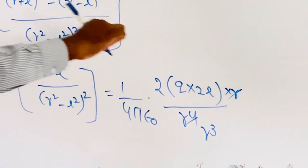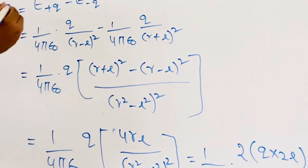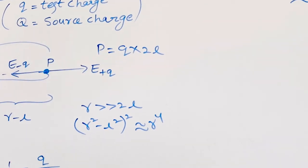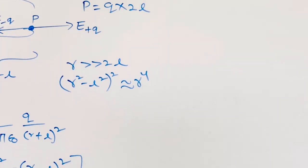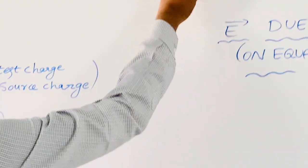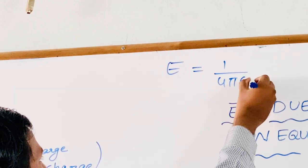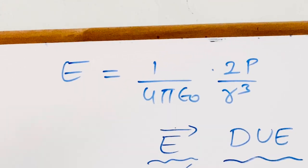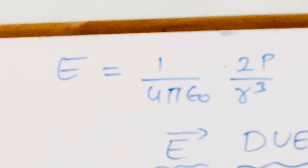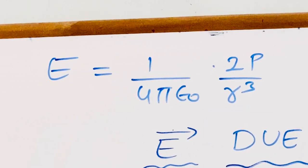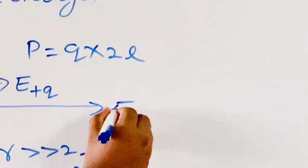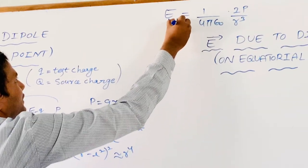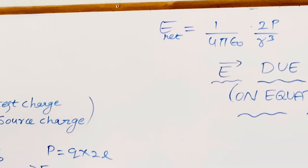We know the definition of the electric dipole moment: P is equal to Q into 2L. Now replacing Q into 2L by P, this expression becomes E is equal to 1 by 4 pi epsilon 0 into 2P by R cubed. So the electric field due to the dipole at axial point P is E net equals 1 by 4 pi epsilon 0 into 2P by R cubed.